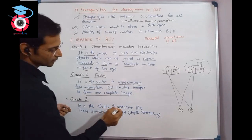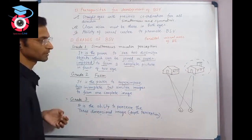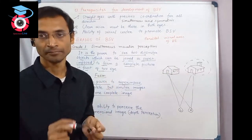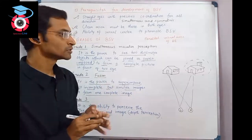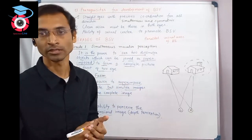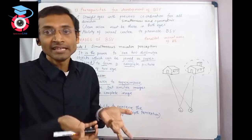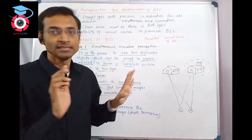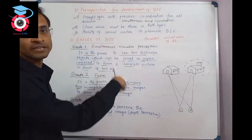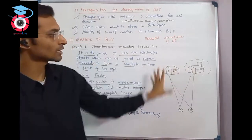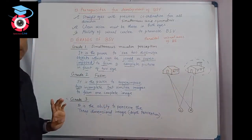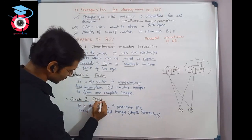Grade 3 is the ability to perceive a three-dimensional image - depth perception. This is stereopsis. If you superimpose similar images, the result looks two-dimensional, like something drawn on paper. But Grade 3, the final grade, gives us a 3D perception. This is the 3D image, the depth perception achieved by binocular single vision.